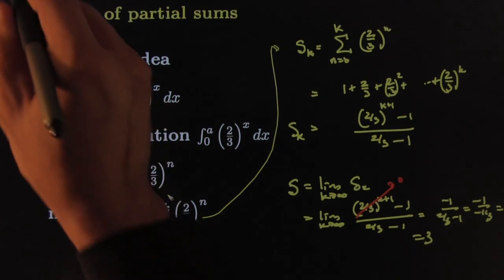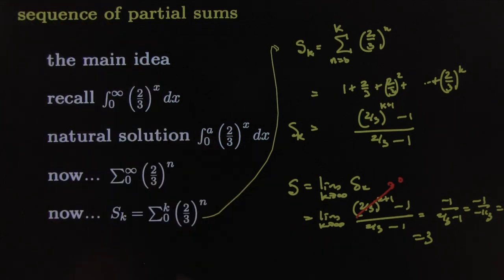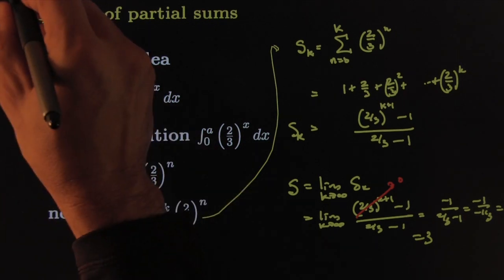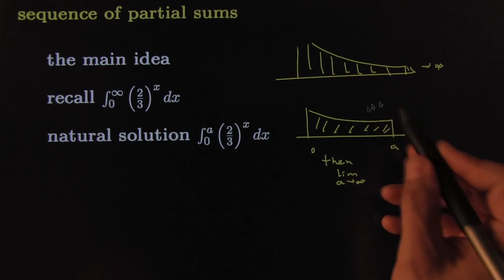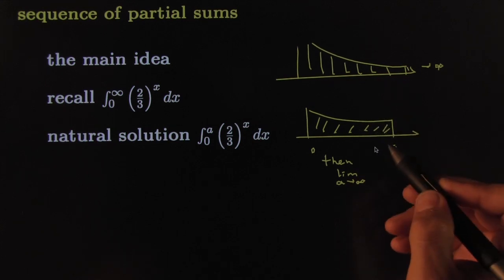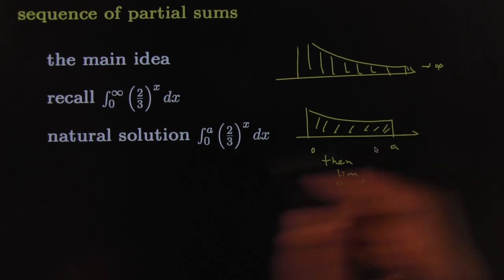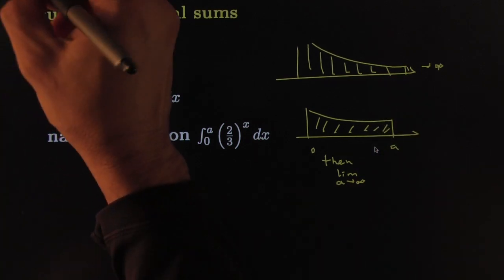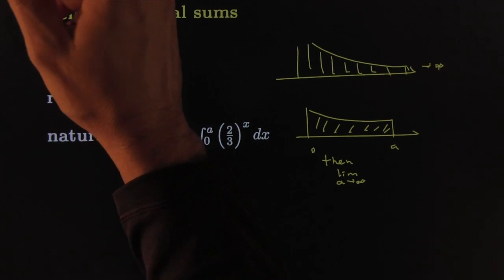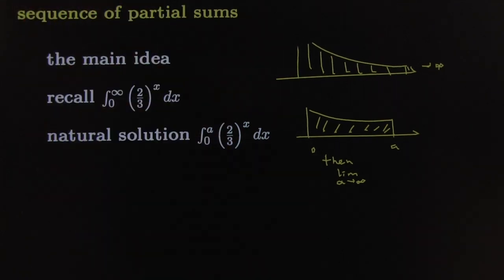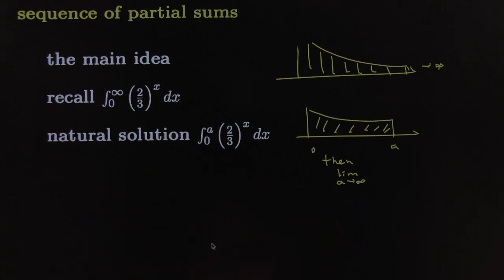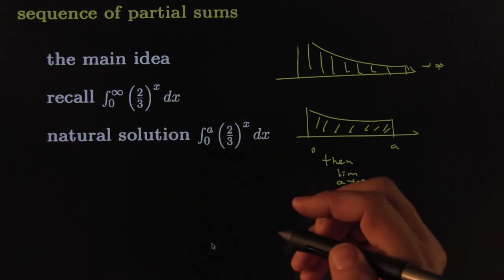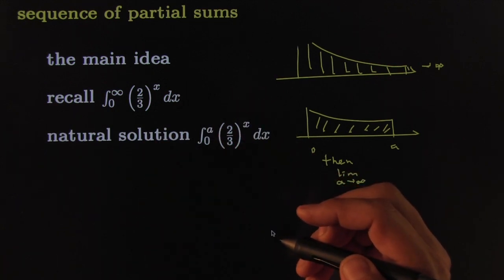In much the same way that we computed improper integrals using partial integrals, we've used the exact same idea here for infinite series. That will do it for the explanation of partial sums — come back for a final thought on what this all means.